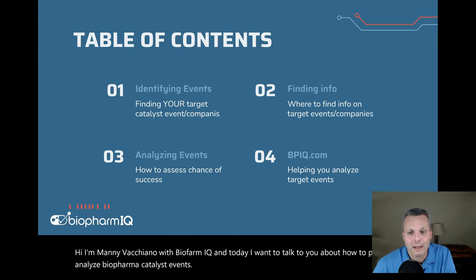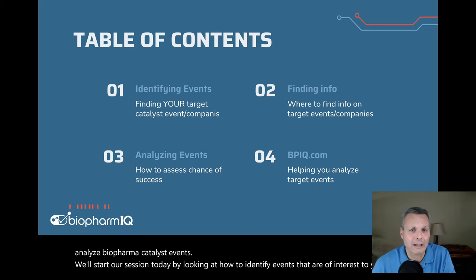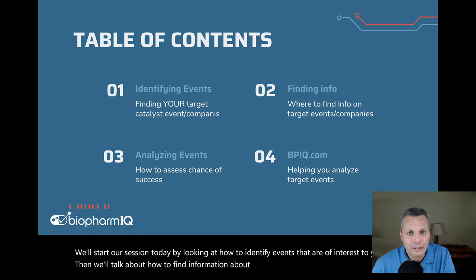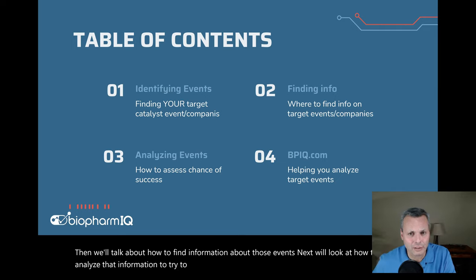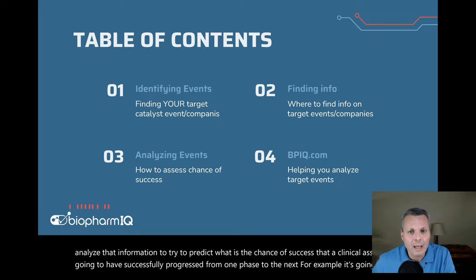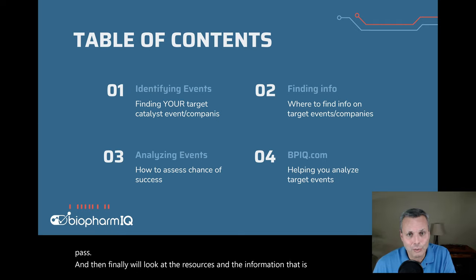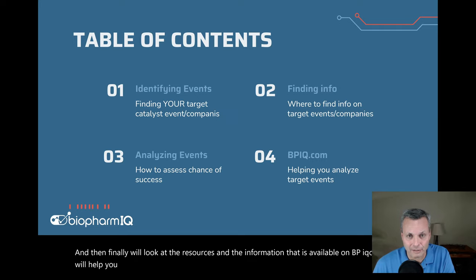We'll start our session today by looking at how to identify events that are of interest to you. Then we'll talk about how to find information about those events. Next, we'll look at how to analyze that information to try to predict the chance of success that a clinical asset is going to successfully progress from one phase to the next. And finally, we'll look at the resources available on bpiq.com that will help you find and analyze these events.